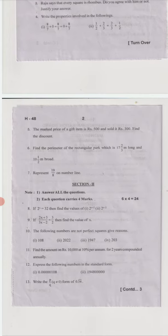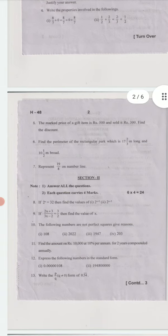Sixth question: find the perimeter of the rectangular park which is 7 2/3 meters long and 10 1/2 meters broad. Here broad means breadth. Mixed fractions are given for length and breadth. We should find out the perimeter. Seventh question: represent 19/8 on the number line.